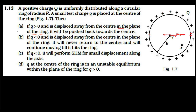In option B, if q is negative and displaced away from the center in the plane of the ring, it will never return and will continue moving until it hits the ring. When the negative charge is at the center, each element attracts it equally in opposite directions, so the net force is zero.